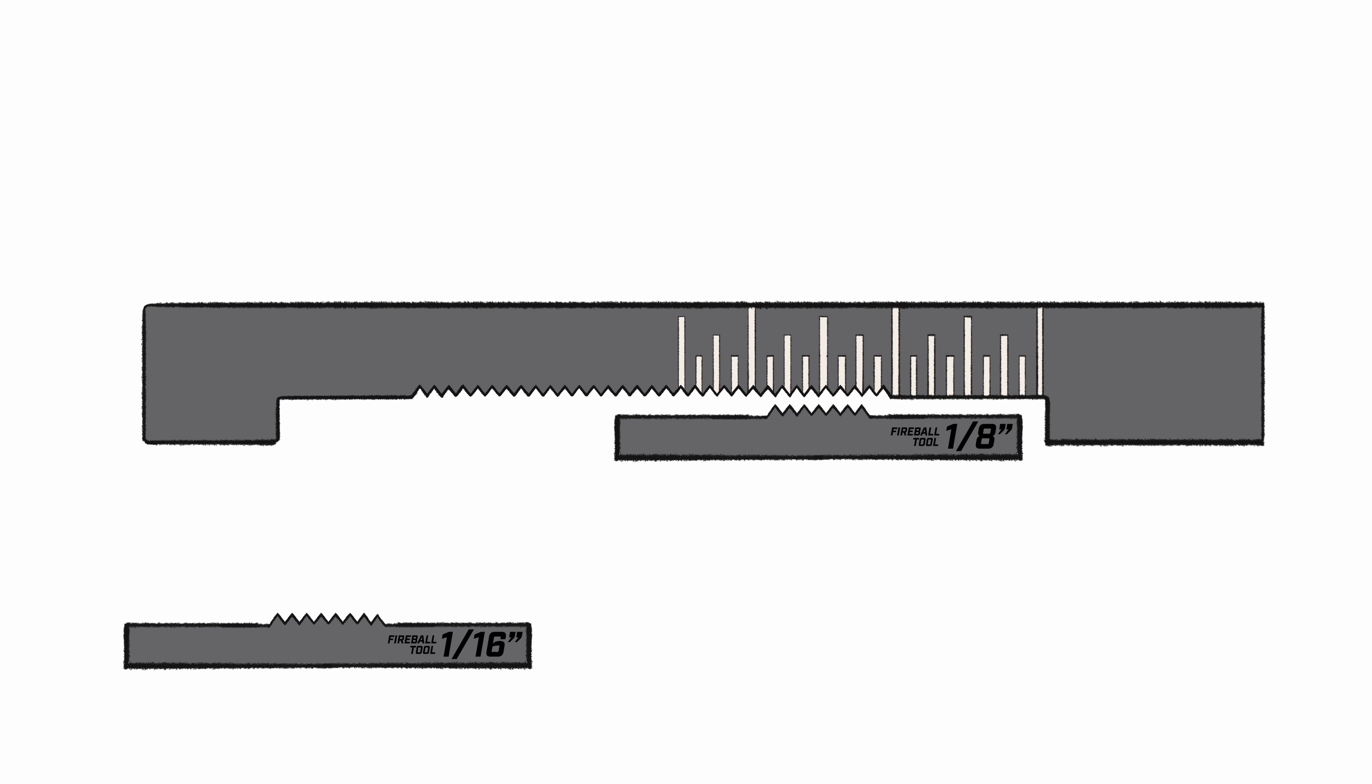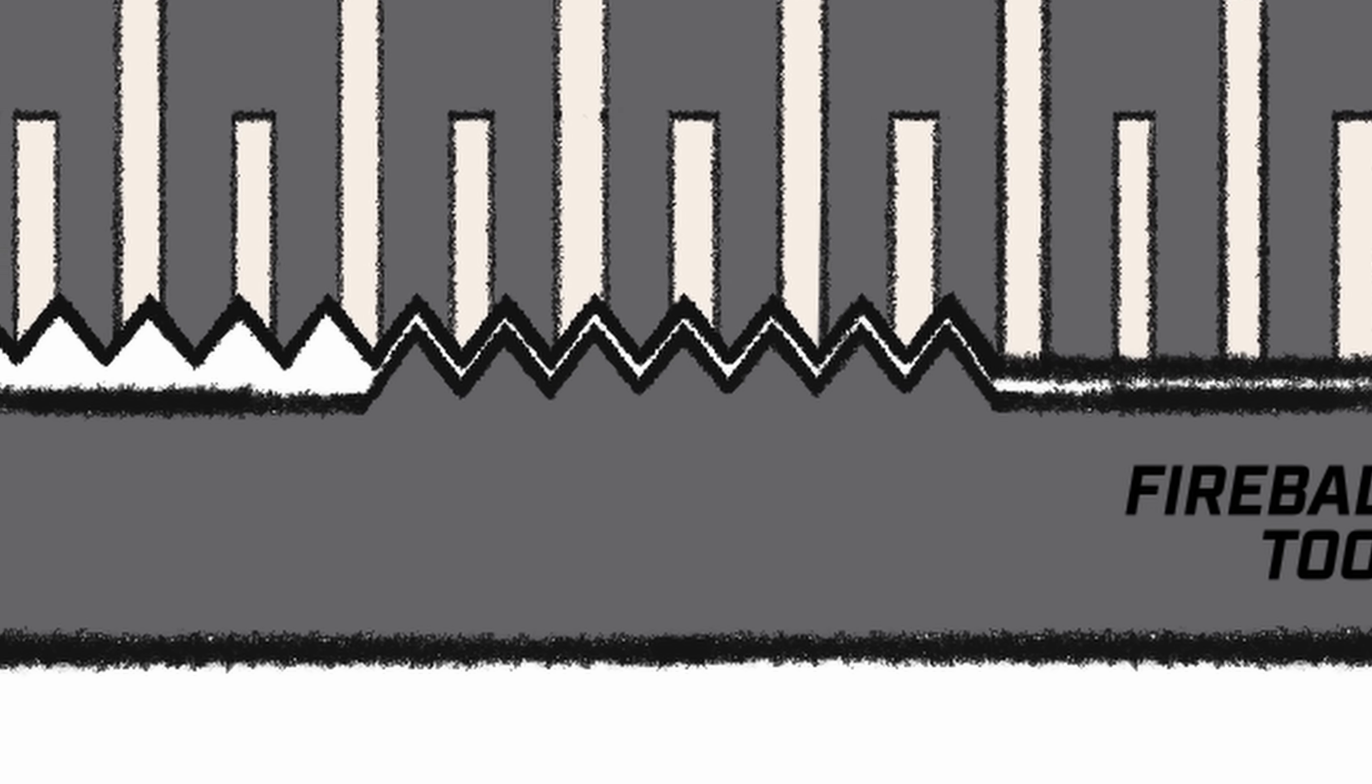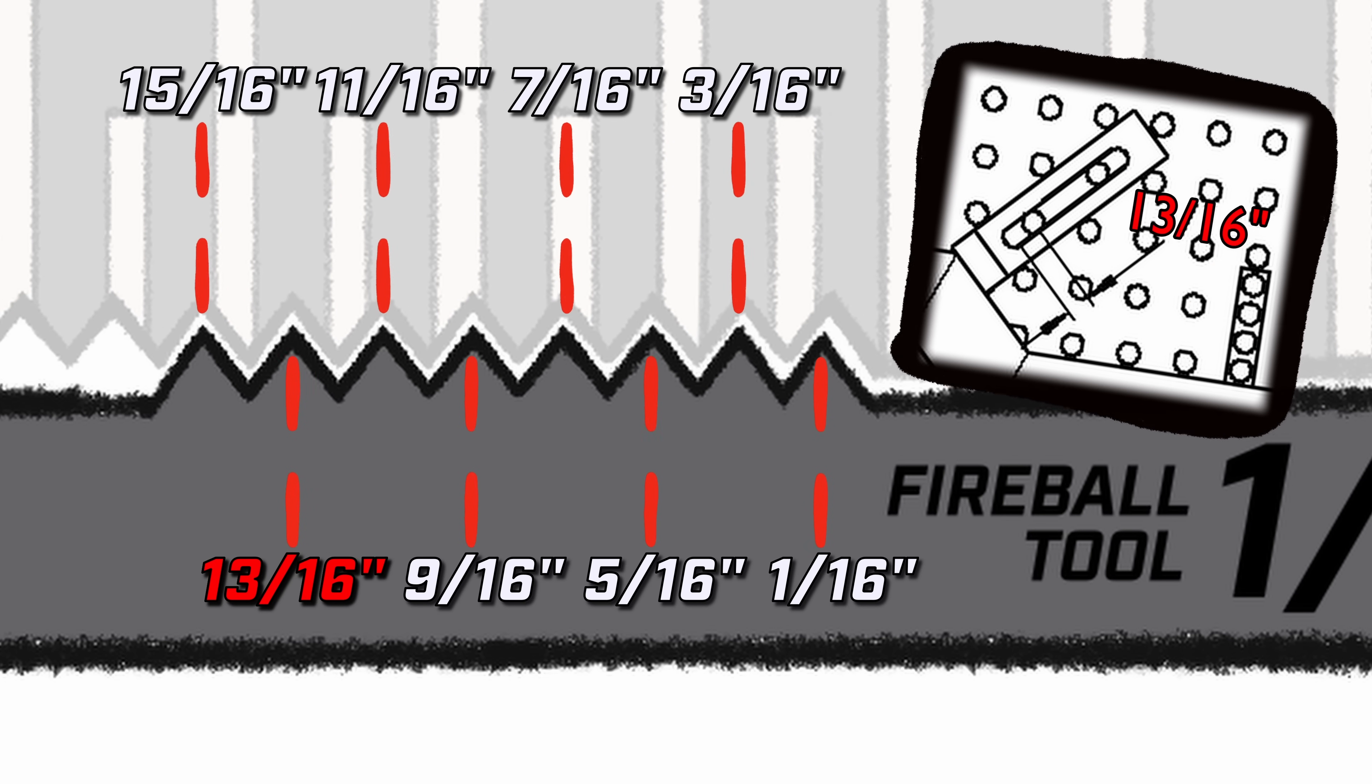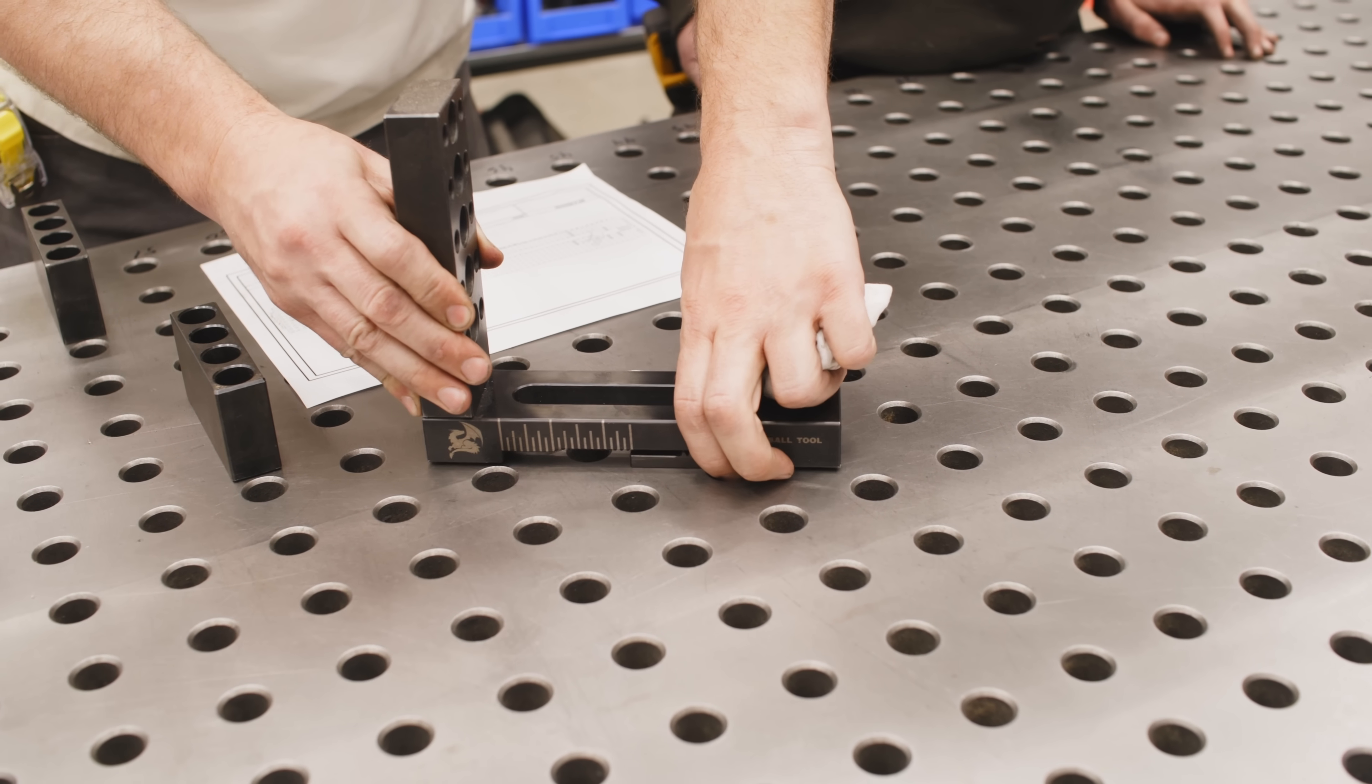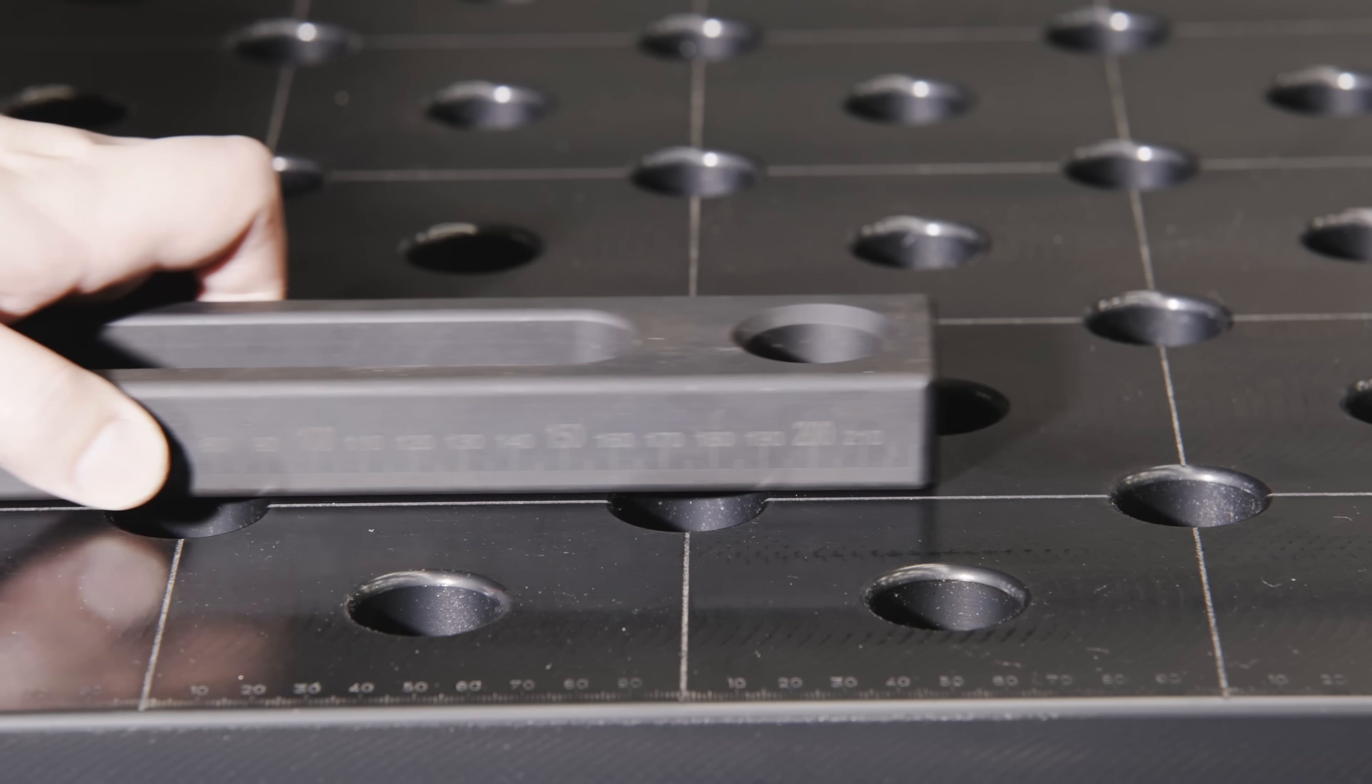The tooth block is pretty unique because it uses two different location washers. One locates the tooth block at one eighth inch increments and another that does one sixteenth of an inch increments. All this is doing is shifting the teeth over one sixteenth of an inch.